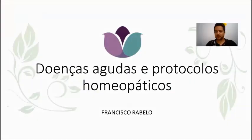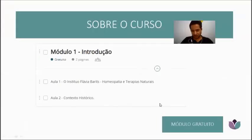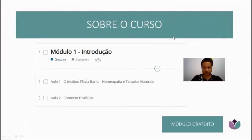So, it's diseases and homeopathic protocols. About the course — the course has 17 modules. In the first module, I will talk a little bit about the introduction, a little bit about our institute, how it was created, how it was founded, what is our role in society, what is our mission in society.